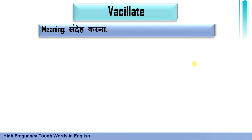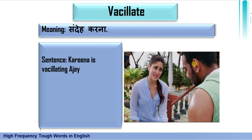The next word is 'vacillate,' which means sandeh karna ya shak karna. The sentence I have formed: Kareena is vacillating about Ajay. You may have watched Golmaal 2, in which Kareena Kapoor vacillates about Ajay Devgan — Kareena Ajay Devgan par sandeh karti hai, shak karti hai.